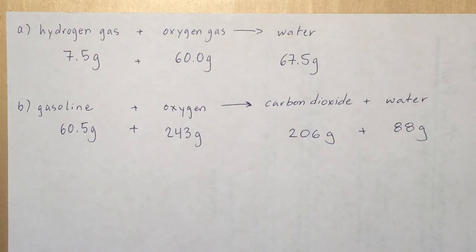And then we go over to the products and we see water is our only product in that reaction. And it is also 67.5 grams. So since 67.5 grams equals 67.5 grams, we can say that example has been consistent with the law of conservation of mass.